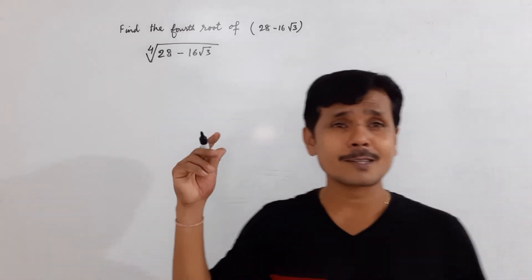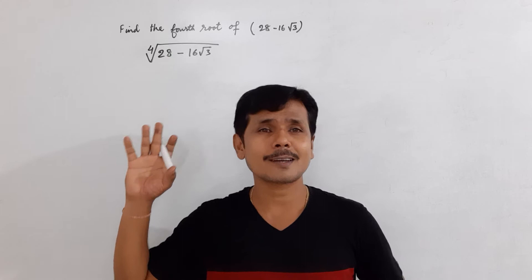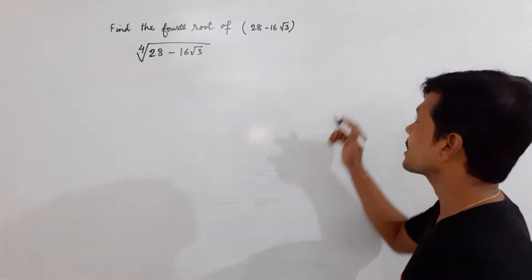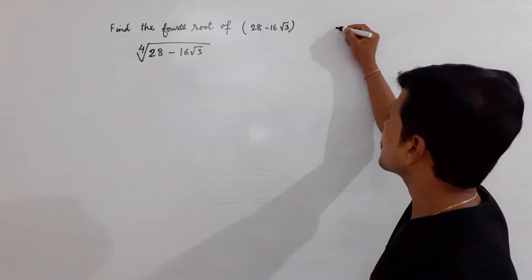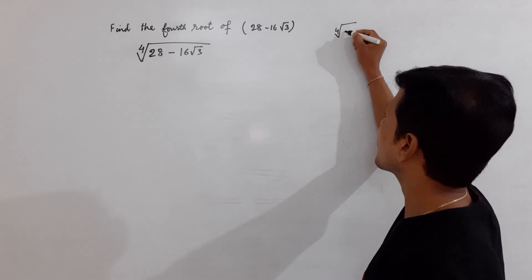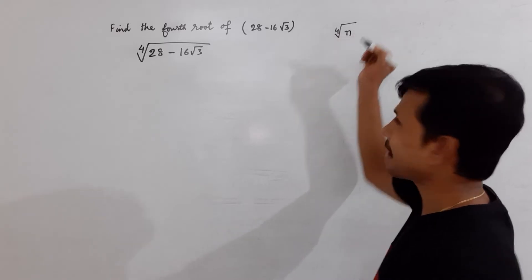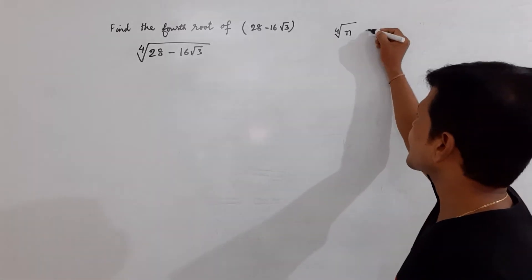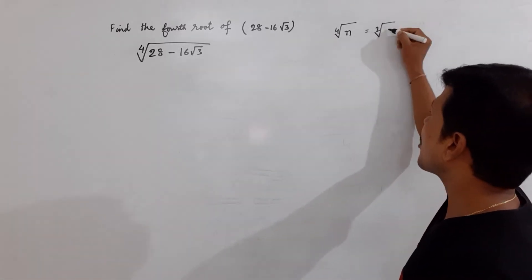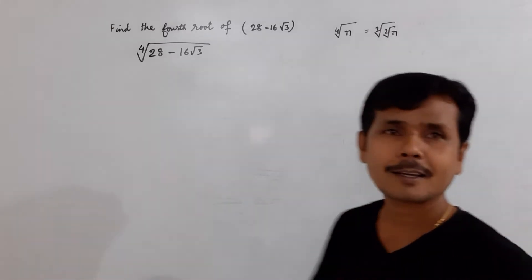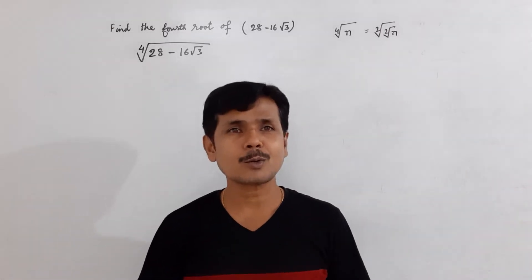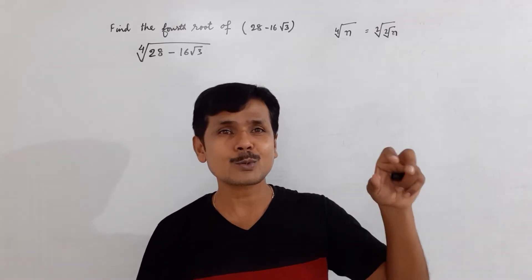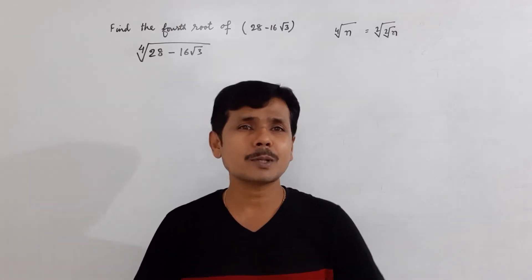Before I start solving, I would love to discuss a few basic things. Suppose I have to find the fourth root of a number n. Can we make it like square root of square root of n? Yes, we can. First we find the square root of that number, and once you get the answer, you find the square root again and you will get the answer.